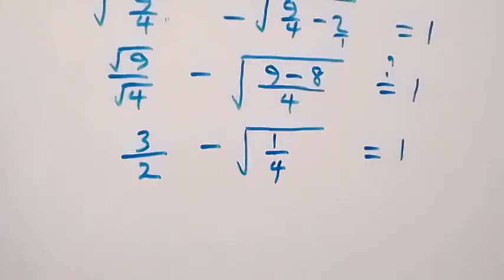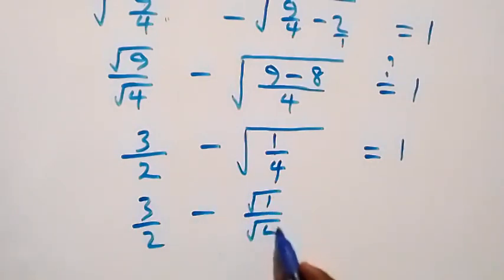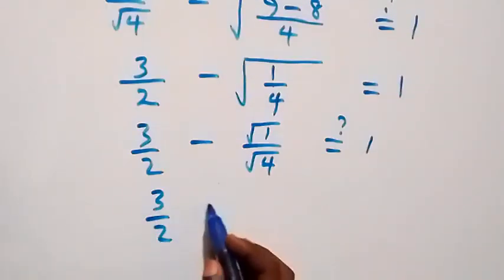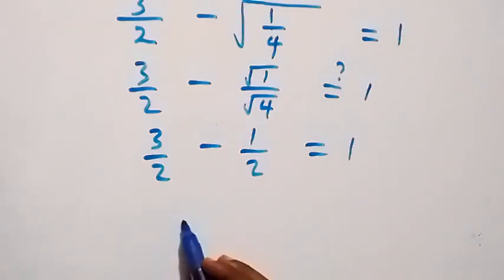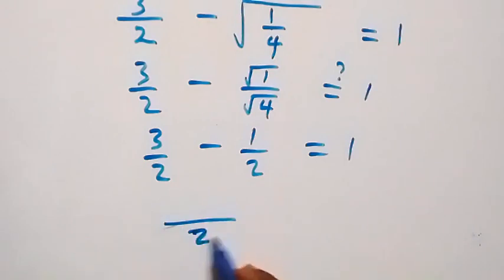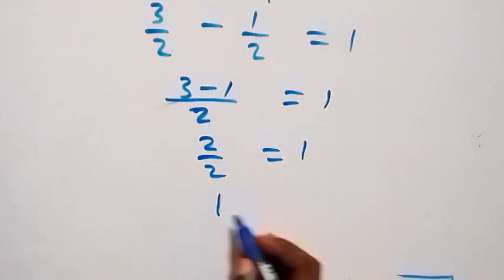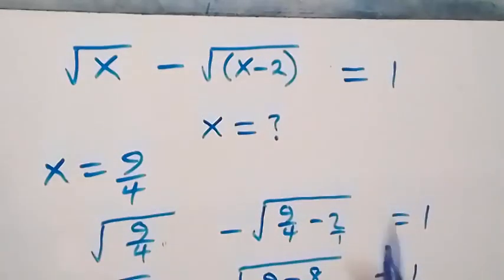We can also write it as √1 over √4, and we get 3/2 minus — root 1 is 1, and root 4 is 2 — so 3/2 minus 1/2, does it equal 1? Bringing this together with common denominator 2, that's (3 minus 1) over 2, which is 2 over 2, and 2 over 2 is 1, which equals 1. So left-hand side equals right-hand side, and hence we conclude that x equals 9 over 4 satisfies the given problem.